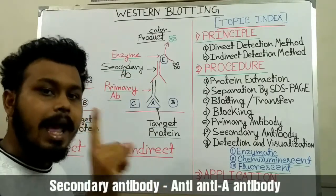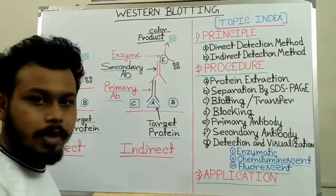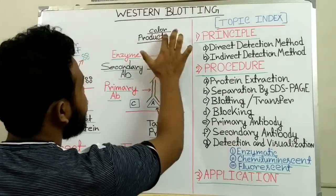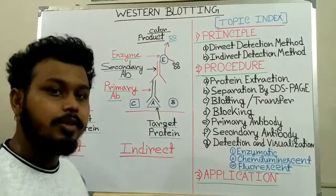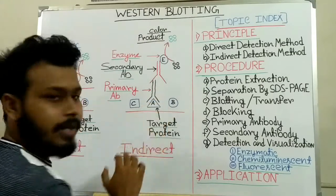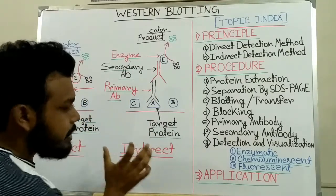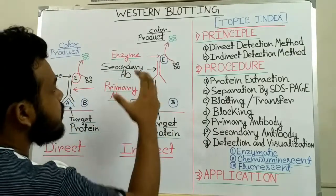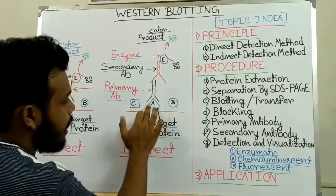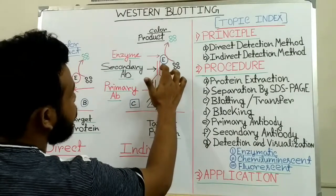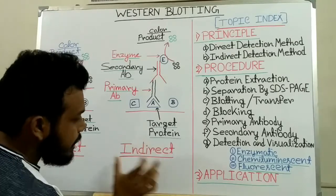This secondary antibody is called the anti-anti-A antibody. To get the signal, we conjugate an enzyme to this secondary antibody. When we add substrate, it converts to a colored product which we can visualize and interpret that protein A is present. This is called the indirect detection method because the signal does not come directly from the binding of antibody to the protein antigen — it comes from the secondary antibody, which does not directly bind to protein antigen A.